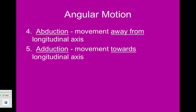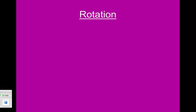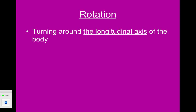Circumduction is when you move things in a loop — for instance, taking your shoulder and making a continuous loop around and around. Circumduction often gets confused with rotation. Rotation is when we turn around the longitudinal axis, like our neck rotating back and forth. The difference is that with rotation there is a limit — you reach a stop point and have to rotate back to another stop point, unlike circumduction where you can keep going continuously.